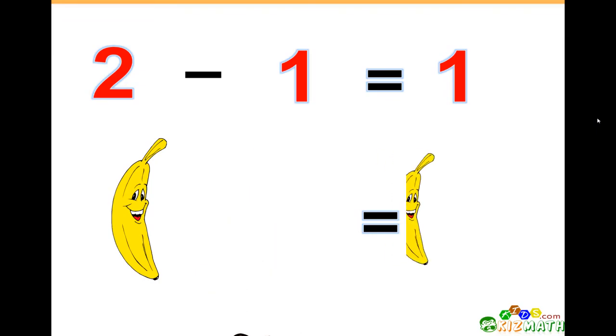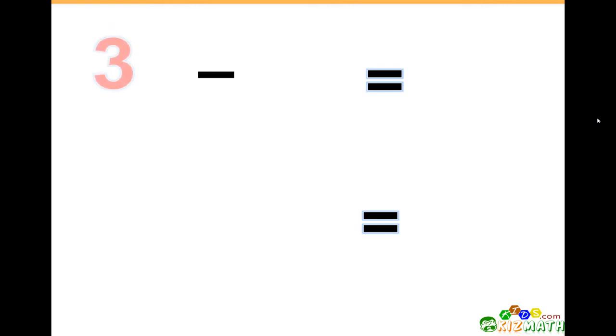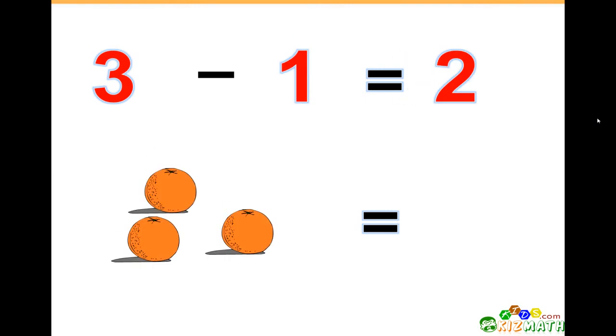3 minus 1 equals 2. If we have three oranges and we take away one orange, we only have two oranges left.